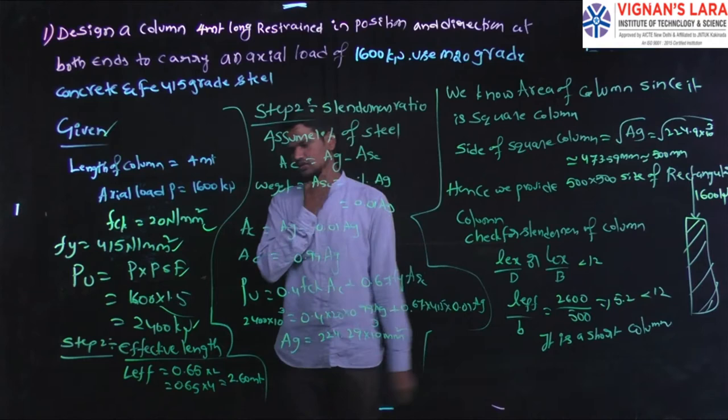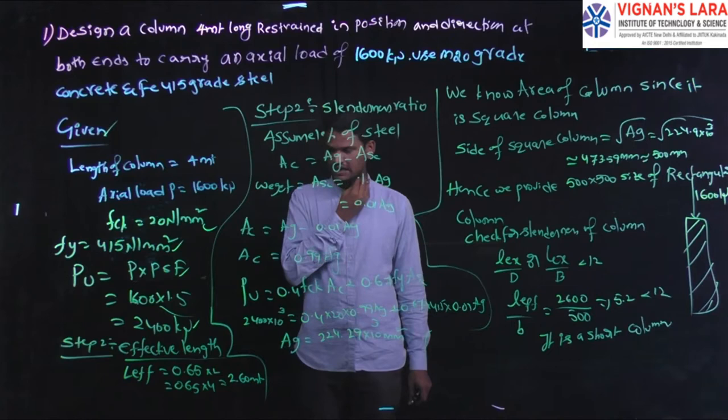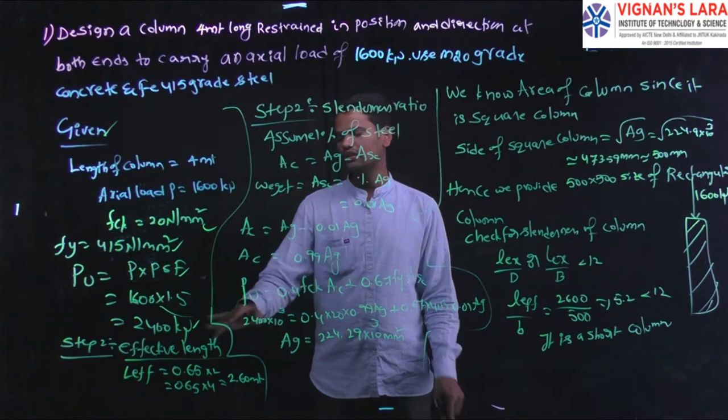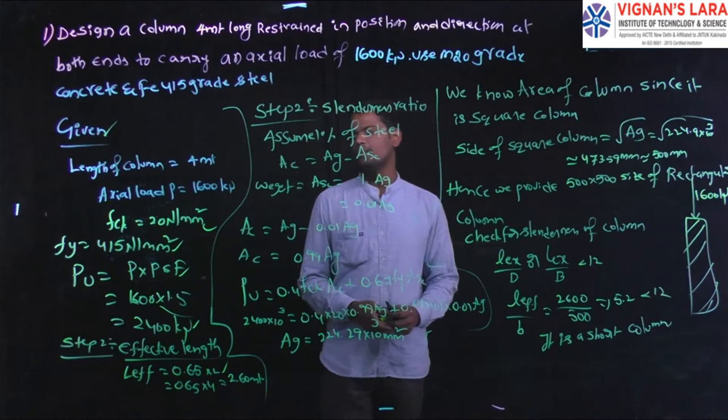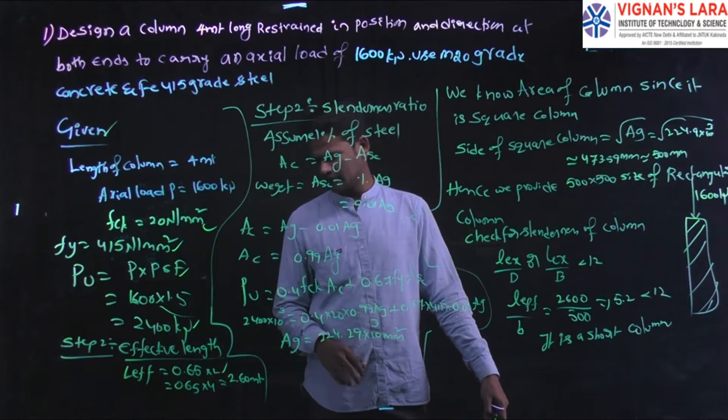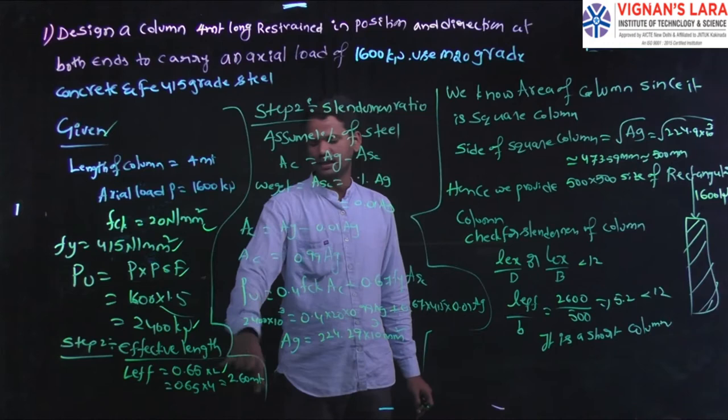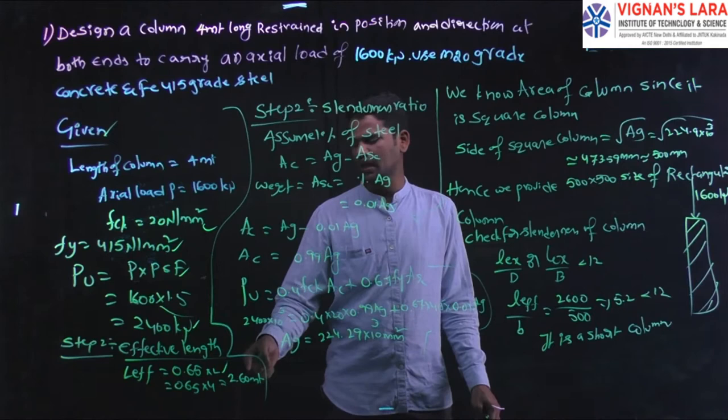Coming to the effective length: we have both the theoretical and design values. When both ends are restrained, the effective length of the column is taken as 0.65 times the actual length. So effective length Le = 0.65 × 4 = 2.60 meters. This design value is taken from IS456:2000.